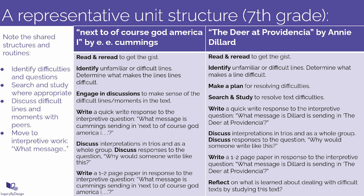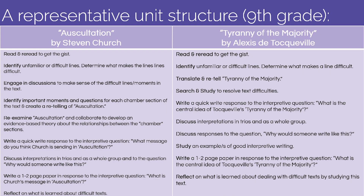This almost always begins by giving students time to identify moments that they find confusing and challenging in the text. We want to normalize the idea that all readers encounter difficulties, and we want students to attend to their own comprehension. Recognizing when things have stopped making sense is an important skill for readers. This is often followed by either search and study work, as with the informational text units, or time to work through challenging moments with peers and make sense of what's going on through discussion.